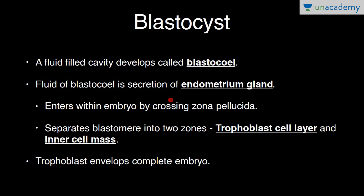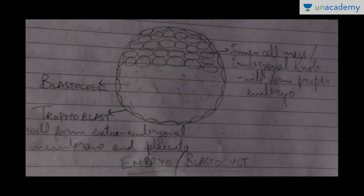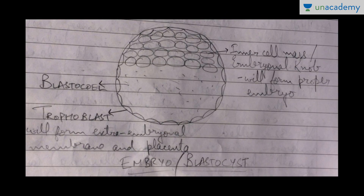At the blastocyst stage we have three components: the blastocoel (fluid-filled cavity), the trophoblast cell layer, and the inner cell mass. The trophoblast cell layer will form extra-embryonal membranes and the placenta. The inner cell mass, also called the embryonal knob, will form the proper embryo.